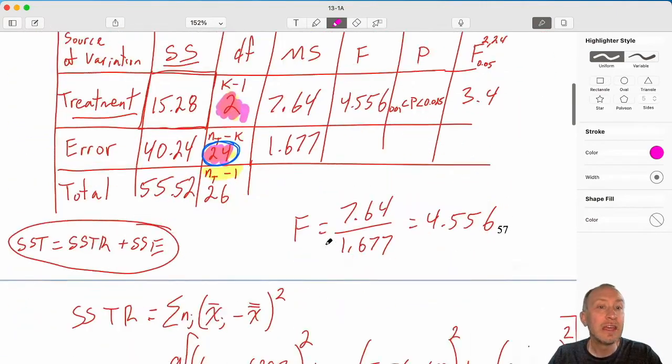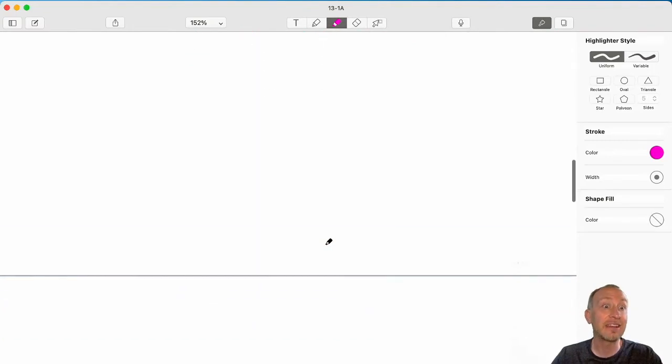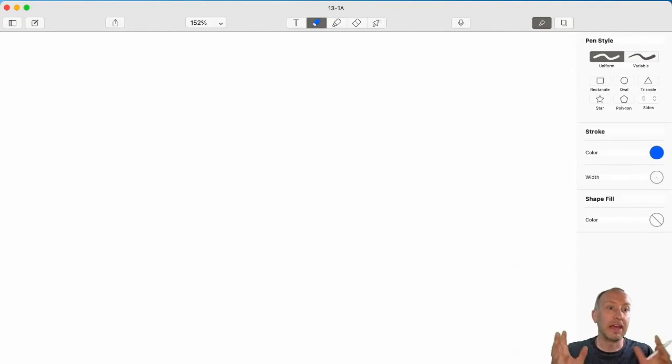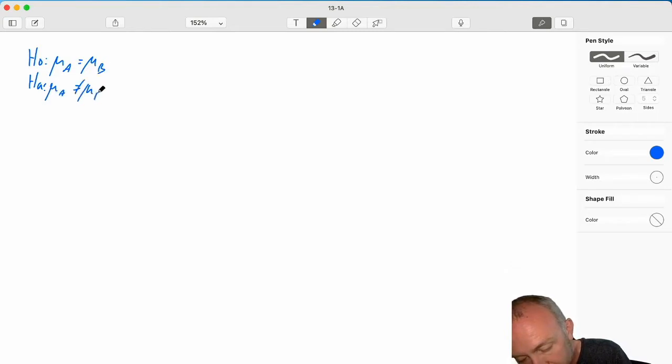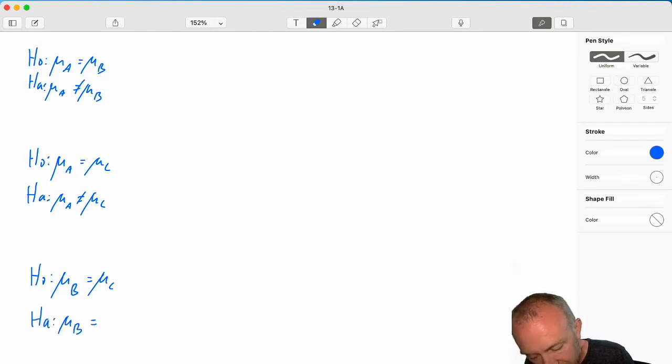We're going to set this up as a series of pairwise comparisons. We have three samples. We're going to test all possible pairs of those samples in hopes of finding where the difference lies. So here we are going to set up our three tests. I want to see is mu A equal to mu B. Yes or no. I want to see maybe mu A is equal to mu C. Yes or no. And finally, I want to see if mu B is equal to mu C. So once again, with only three samples, we only have three possible pairs.